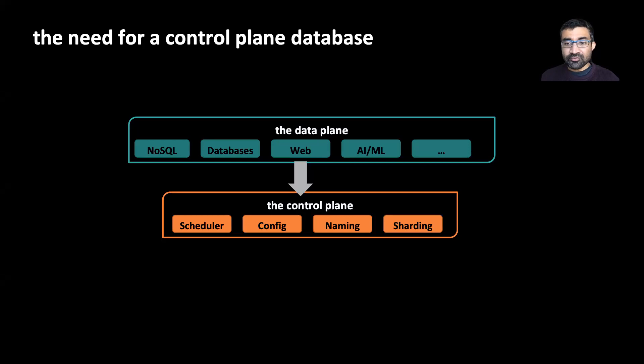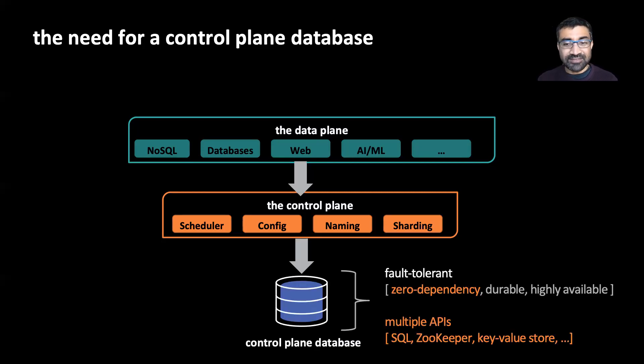Delos is a control plane database. Let me first tell you what that means. If you look at the Facebook software stack, it has a data plane which consists of services that store and process user data, and a control plane which consists of infrastructural services like schedulers, configuration services, and so on. Now the control plane is stateful. These services have to store the state in some database, which we call the control plane database.